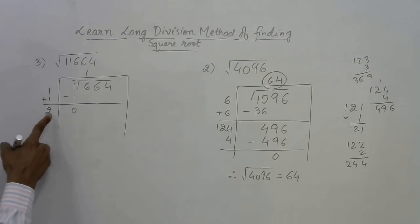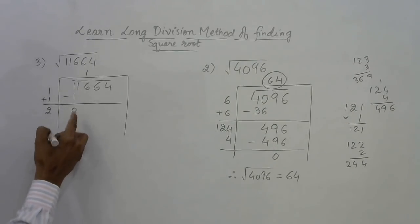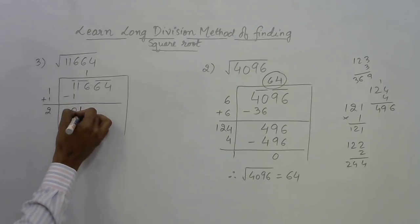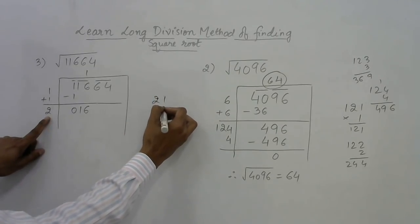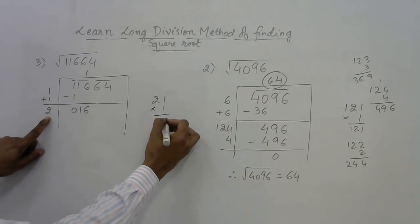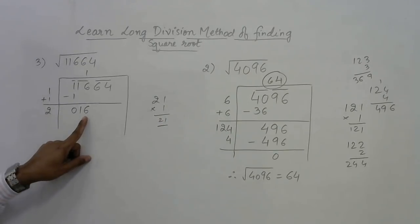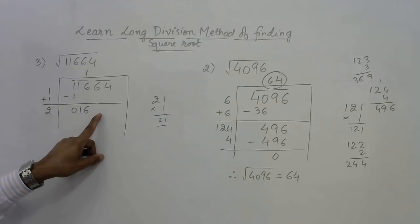2 is more than 0, so bring the next pair down—16 comes here. Now if I select after 2, if I select even 1, then 21 into 1 will give me 21 which is greater than 16. So what we need to do here is bring one more pair from here.